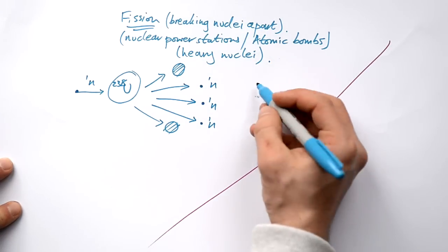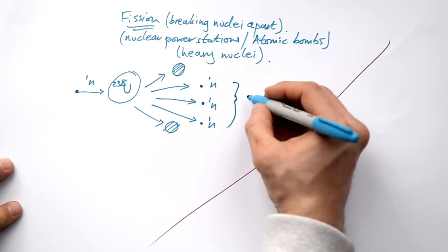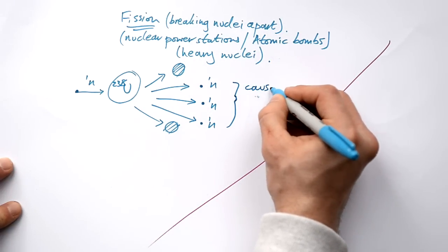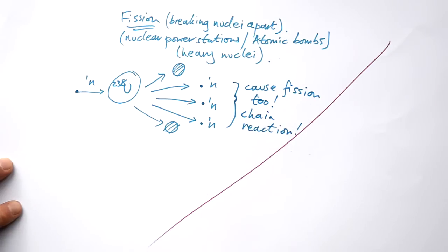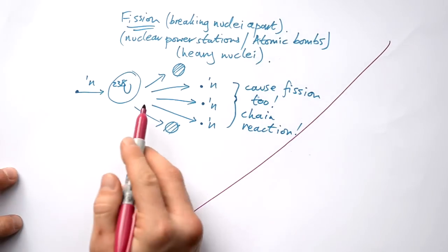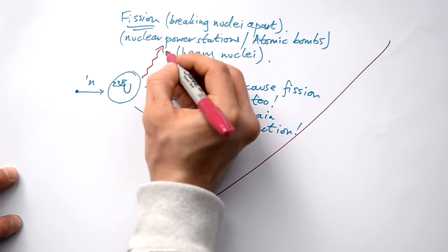Where do these three neutrons go? Well, if there are more uranium-238 atoms around, these will cause fission as well. And that can lead to a chain reaction. And that can be a good thing if it's controlled, but it can also be a very bad thing if it's left unchecked. And that's because every time fission happens, we always get energy being made.